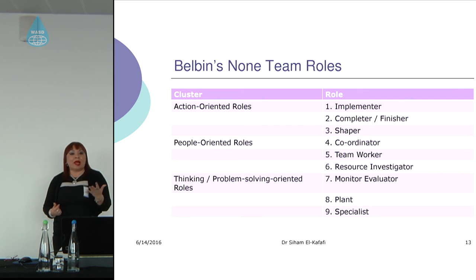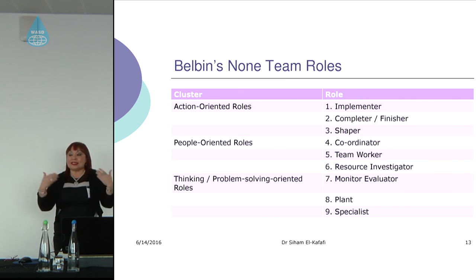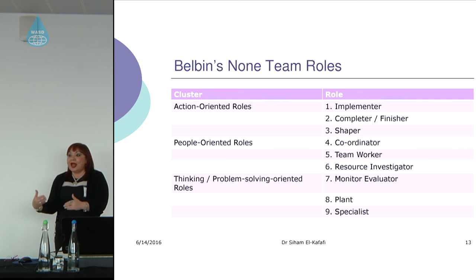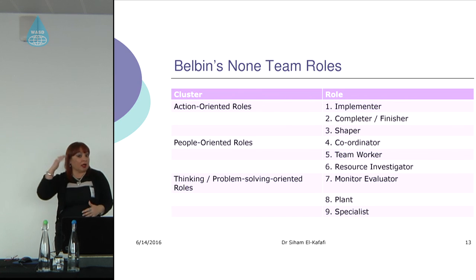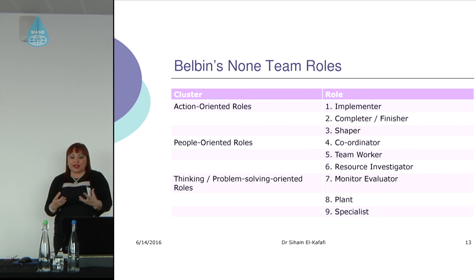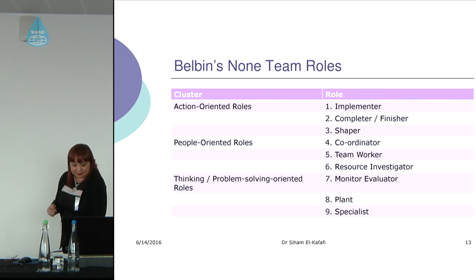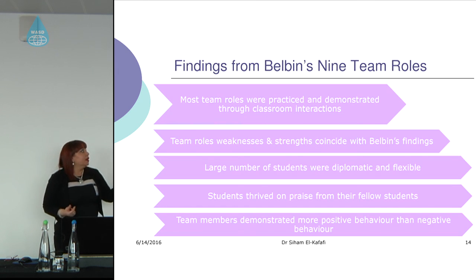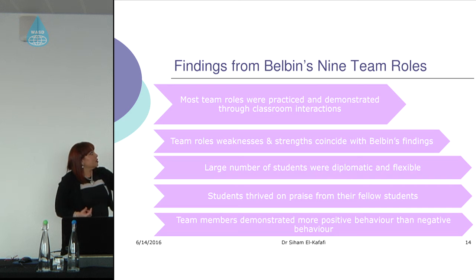Regarding Belbin's nine roles — similarly, Belbin developed eight roles first and then added a ninth after practicing with actual teams. Belbin said that how successful or how much failure a team experiences is related to high conflict within team members and not assuming these roles. I've divided them into three clusters: action-oriented roles, people-oriented roles, and thinking/problem-solving roles — detailed in the paper. Most of the team roles were practiced and demonstrated through classroom interaction.